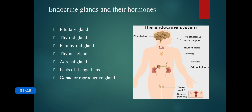A gland is an organ that makes and puts out hormones that do a specific job in our body. An endocrine gland is a kind of gland that doesn't have any duct — it secretes hormones that travel from one side of the body to another through the bloodstream.